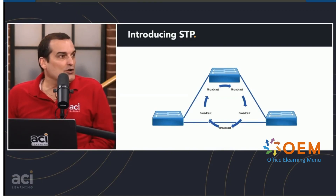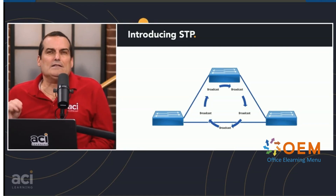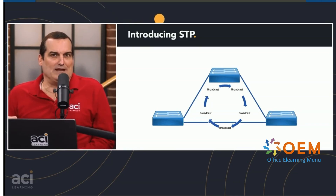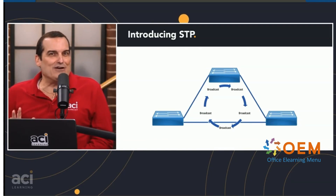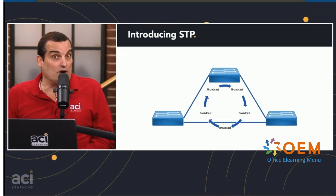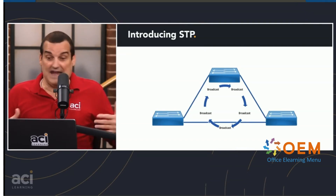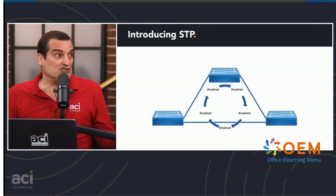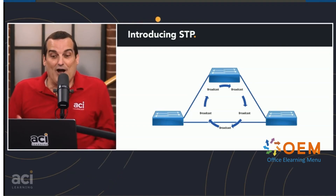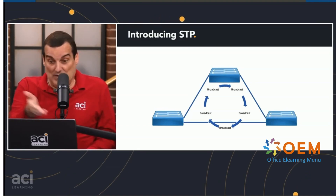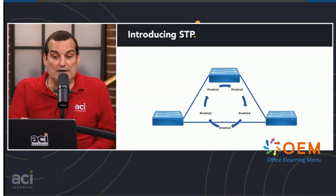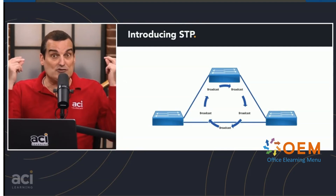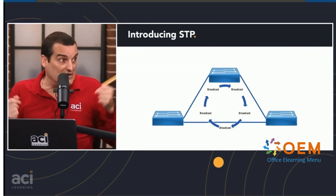That was going to be my question — what happens when a storm happens? It's really bad; the network is just broken. Spanning tree protocol to the rescue. The first thing I want to say about spanning tree protocol is it just works. It's on by default and it just starts doing its job without us doing anything. So if these are three Cisco switches connected together like this, we won't get a broadcast loop because spanning tree protocol is on by default and will just do its job.